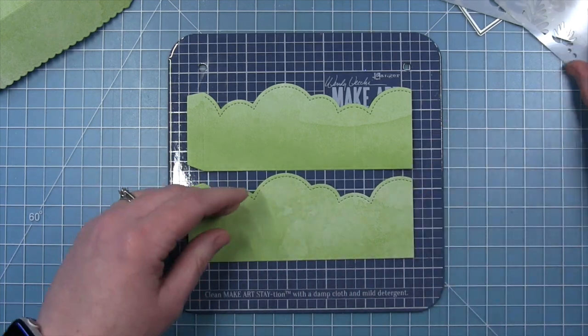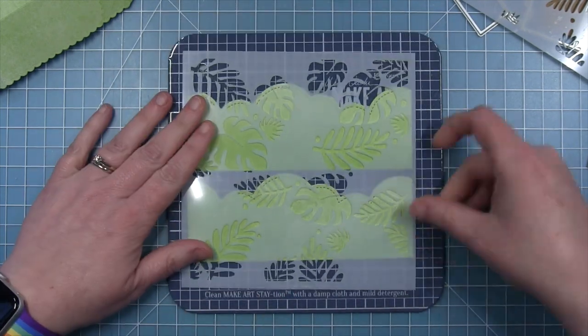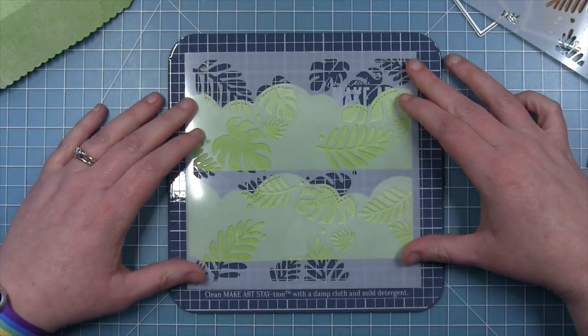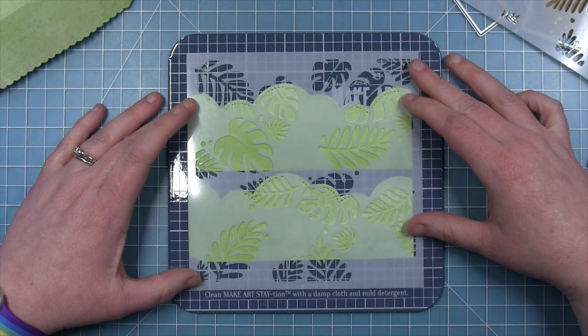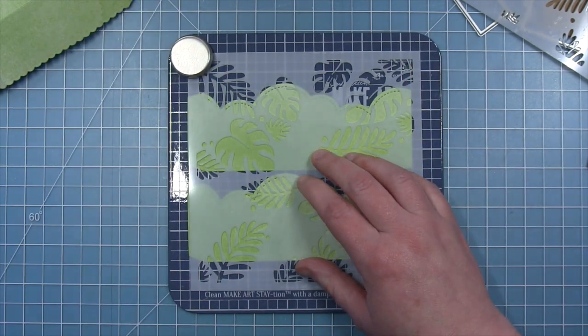I am going to do some stenciling on these wraparound pieces. So I've used some temporary adhesive to stick them down to my media mat, and I've placed them so that I can stencil both pieces at once with one stencil.